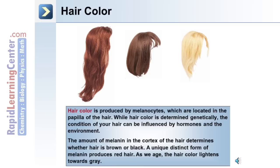The amount of melanin in the cortex of the hair determines whether the hair is brown or black. For red hair, there is a distinct form of melanin that produces the red color. As we age, the hair color lightens towards gray.